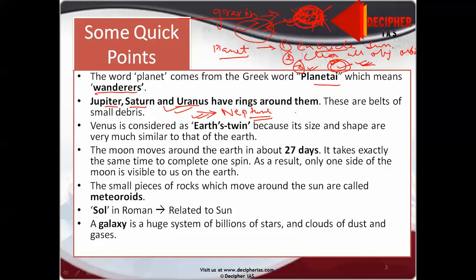The small pieces of rocks which move around the sun are called meteoroids. Sol in Roman is a root word related to sun, and from this only our solar energy or solar system comes.